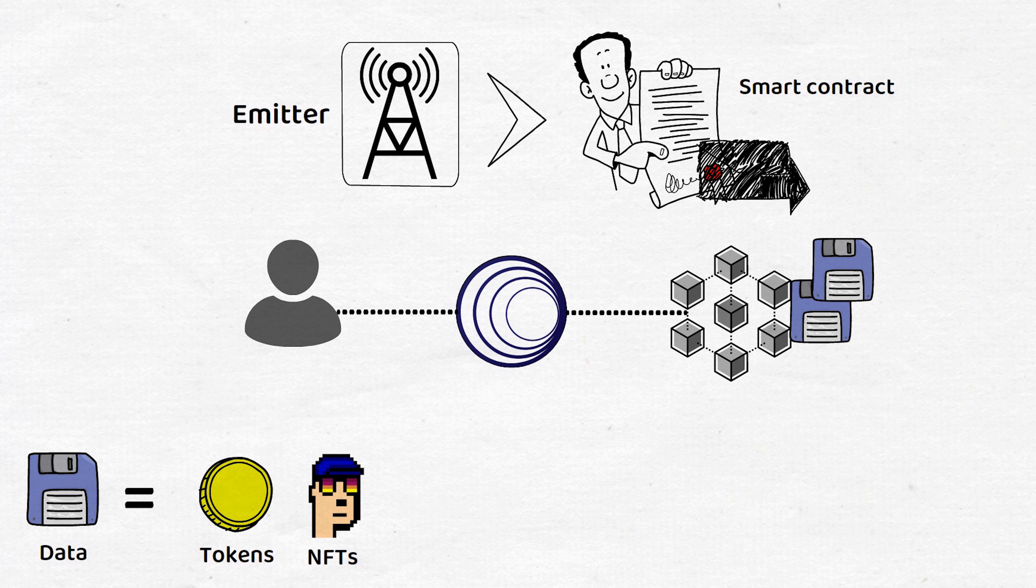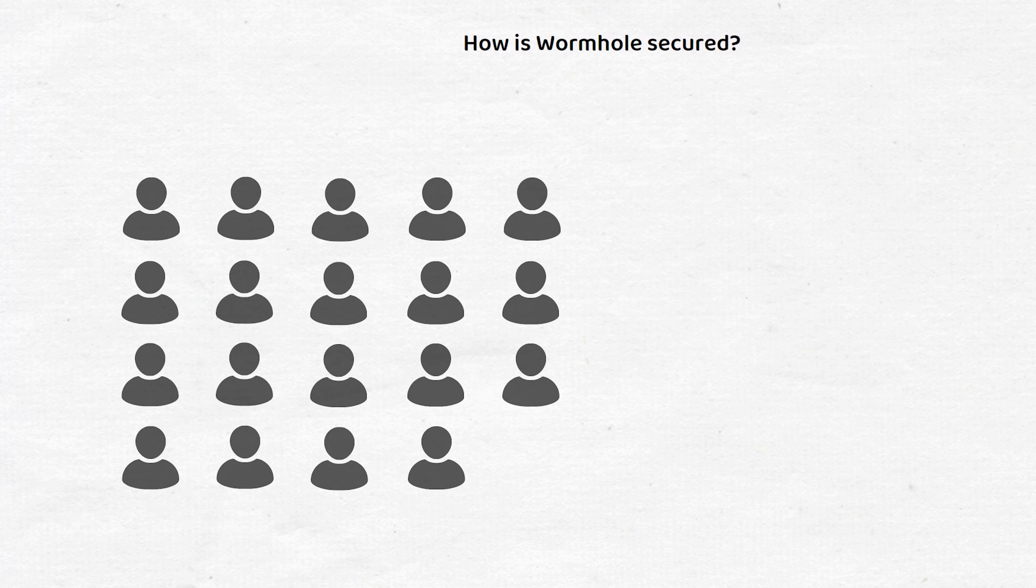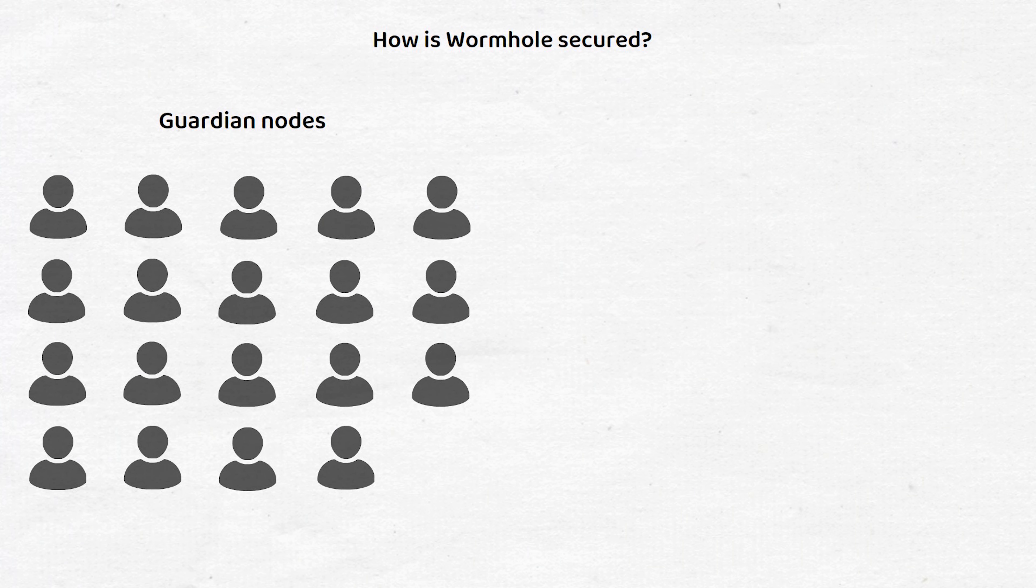This message gets picked up by Wormhole, allowing the data to be transferred to another blockchain. Wormhole is secured by a peer-to-peer network of guardian nodes, which are the validators Wormhole has selected to secure their network.